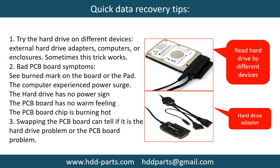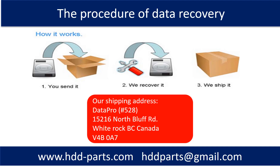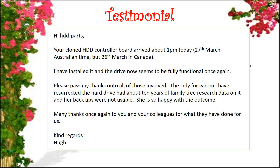There are some simple ways to recover data from a hard drive. One is to try reading the hard drive with different devices, like different external hard drive adapters, computers, or enclosures, because different devices use different ways to read a hard drive — and sometimes this trick works. Another way is swapping the hard drive PCB board, which can fix problems caused by the PCB board. There is a cost in swapping the PCB board, but it is way cheaper than sending the hard drive to a data recovery firm. This picture shows the procedure for how we do data recovery for our clients: the client sends their hard drive to us, we do data recovery, and we ship back the data to our clients.